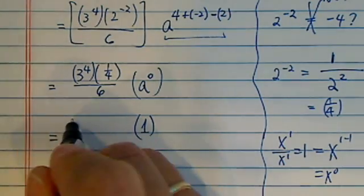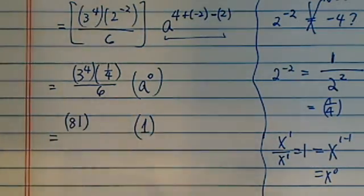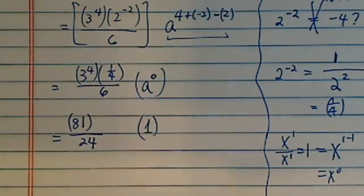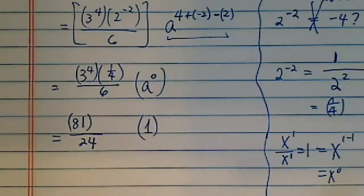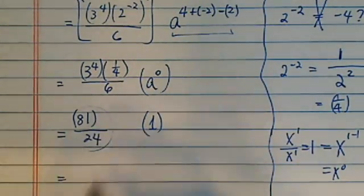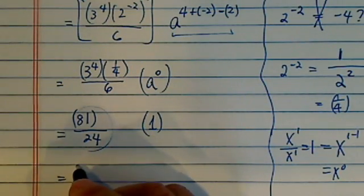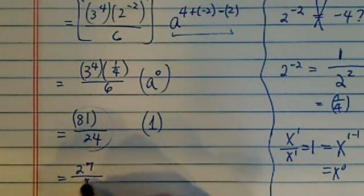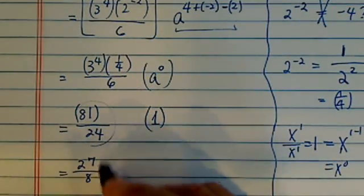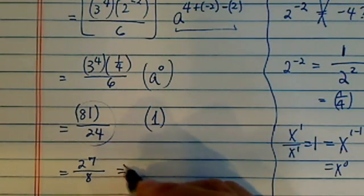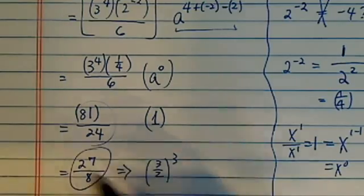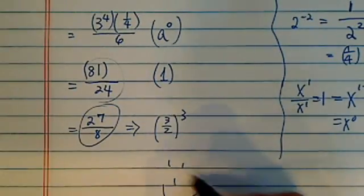Coming back over here, we have 3 to the 4, that's 81, it's 9 times 9, divided by 24 because 1 over 4 divided by 6 is 24. So all we have left is to simplify this, and we have a common factor of 3 in there. This is 27 over 8. And let's see, did I miss anything? If you see this is a cubic, that's great, if you don't see it, it's no big deal, but this is good enough. Have a confident day.